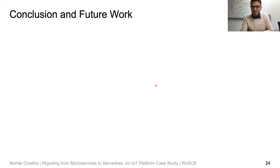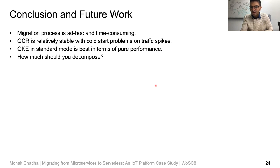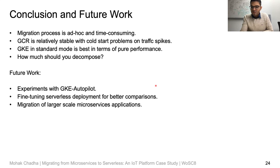The main takeaways are: migrating a microservices application is mostly ad hoc and application dependent. Before starting the migration process, the developer should consider the amount of code that can be reused. On traffic bursts, response times in GCR can significantly increase. GKE standard has the best performance, although at higher cost. The amount of decomposition is also important — we observed that migrating deeply nested microservices applications into individual FaaS functions can lead to worse performance and more cost. In the future, we plan to experiment with GKE Autopilot, different FaaS configurations such as concurrent request handling and minimum instance counts, and we are looking into migrating larger microservices applications.